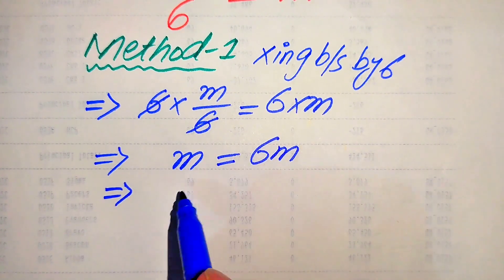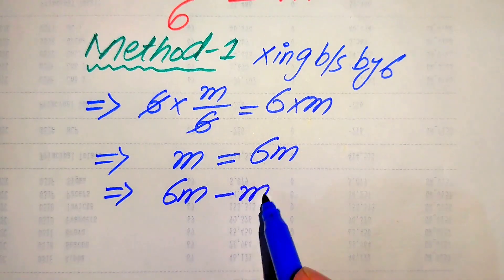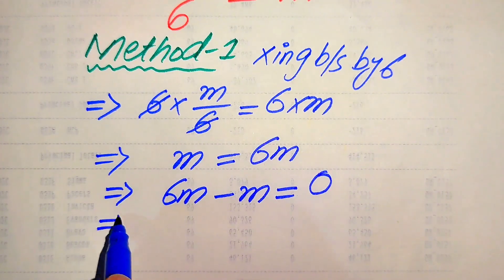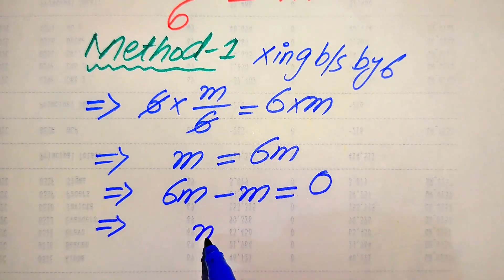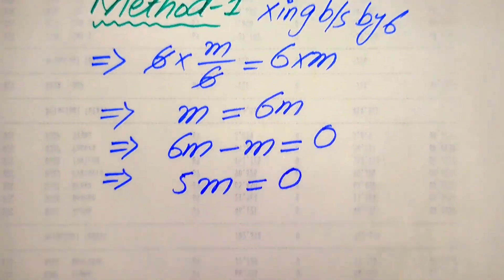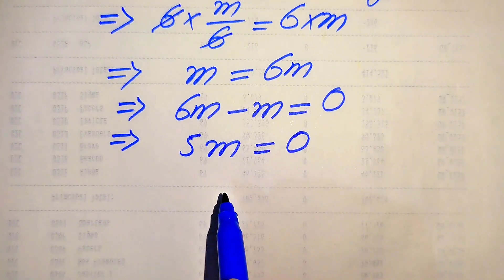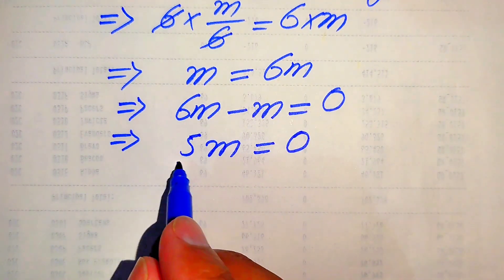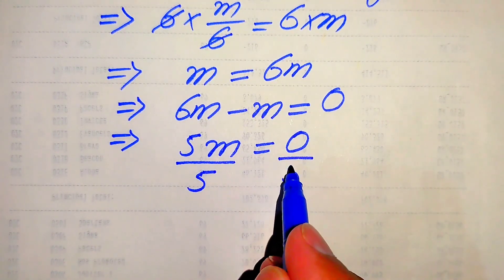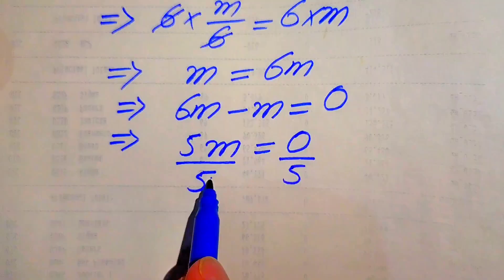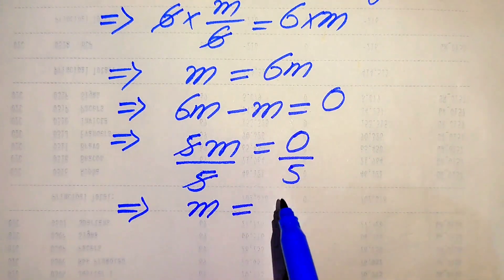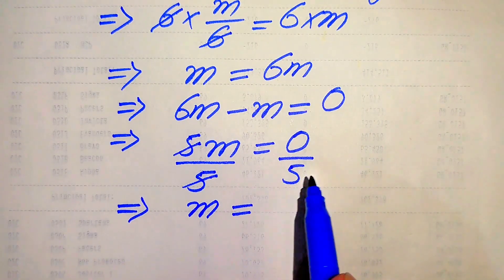This is positive m; when we move it to the right hand side it becomes negative m, so the whole equation equals 0. You see here 6m minus m equals 5m, and this whole equation equals 0. Because we are solving for m, we divide both sides by m to eliminate m from the left hand side, and you see here this m and this m cancel, giving us 0 over m.